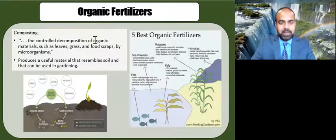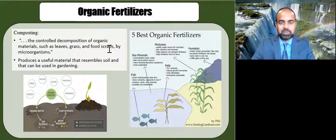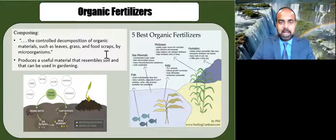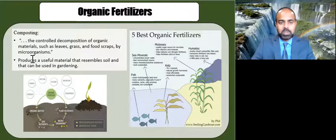One example of an organic fertilizer is composting. Composting is essentially the controlled decomposition of organic materials — such as leaves, grass, and food scraps — by microorganisms. These microorganisms decompose the materials into products that can be recycled into the soil and taken up by plants. Compost is a useful material that resembles soil and can be used in gardening.